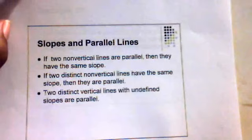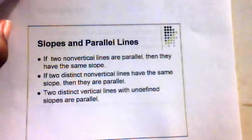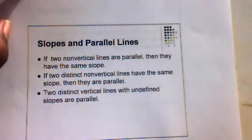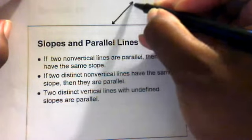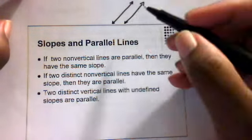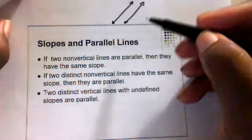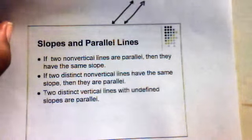We'll first talk about the relationship with slopes and parallel lines. If two non-vertical lines are parallel, then they have the same slope. And also, if two distinct non-vertical lines have the same slope, then we can say that the lines are parallel. What parallel means is that you have two lines that do not intersect each other. So these will be a pair of parallel lines — they're not going to intersect at a point anywhere. Two distinct vertical lines with undefined slopes are also parallel.